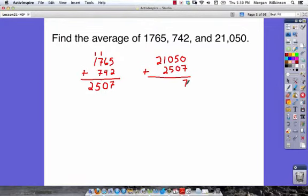0 plus 7 is 7. 5 plus 0 is 5. 0 plus 5 is 5. 1 plus 2 is 3. And we've got a 2. So we've got a sum of 23,557. So when we're finding the average, we know we're going to have to say the sum divided by the number of numbers. So we have 23,557, and we're going to divide that by 3 because we have three numbers again.